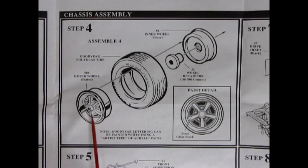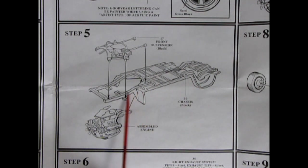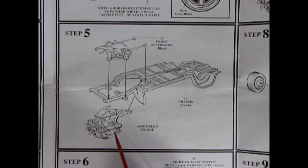Here is step five showing our chassis pan going in with the K-member front suspension, which of course has the torsion bars for springs. And then our big engine will drop in underneath here.